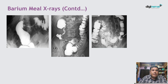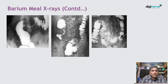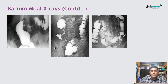Barium meal X-ray can be of three types: barium swallow, which is mainly done for the upper GI tract, specifically the esophagus and stomach; barium follow-through, done to visualize the small intestine; and barium enema, mainly used to visualize the large intestine. These are some examples of barium enema showing carcinoma of the colon with irregular filling defects in the middle and third images as well.